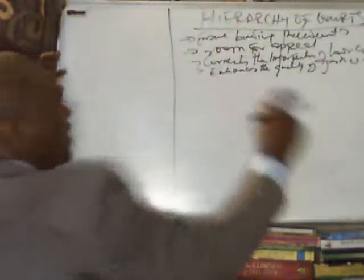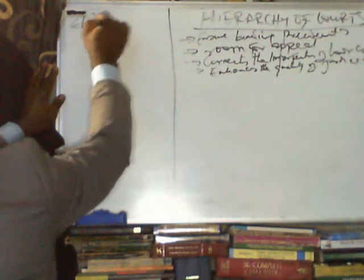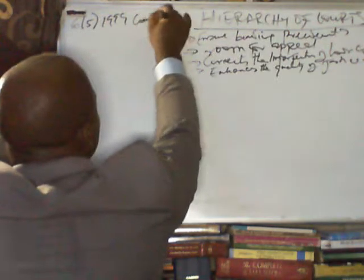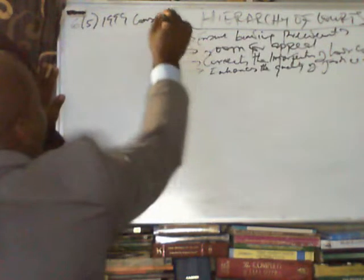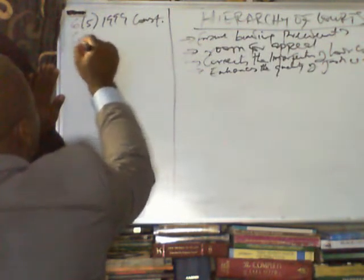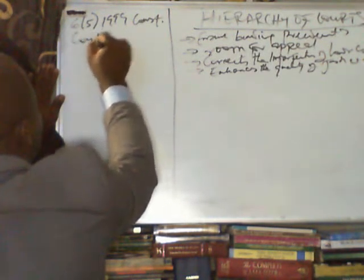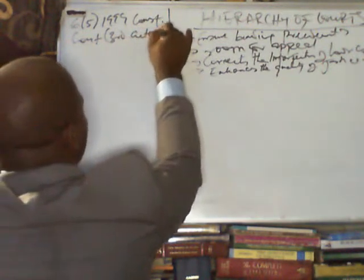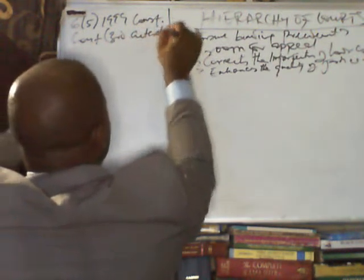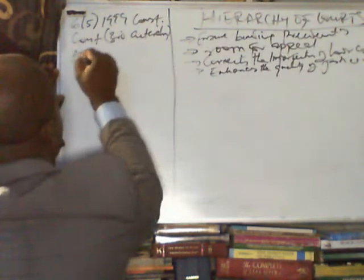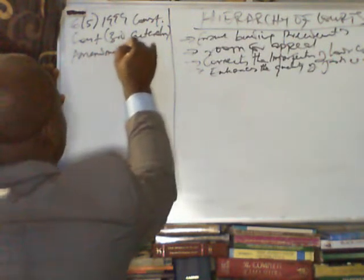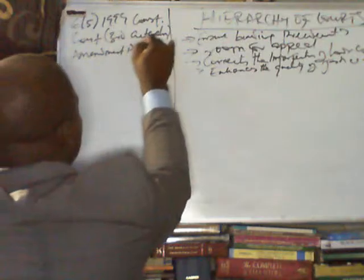In order to find the hierarchy of courts in Nigeria, we have to look at Section 6 of the 1999 Constitution, together with the Constitution Third Alteration Amendment Act of 2010.